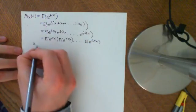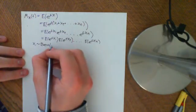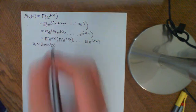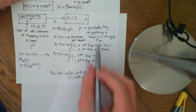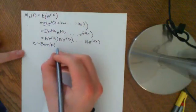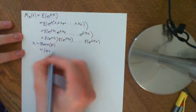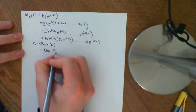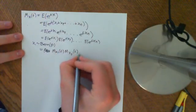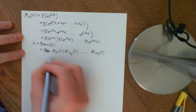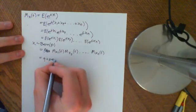Now, all of X1 through Xn are distributed Bernoulli because they each take on two possible values, and the chance they take the value 1 is p — the probability of getting a head on that individual flip. So they are all Bernoulli distributed with parameter p. We can therefore write each expected value as the moment generating function of Xi as a function of t, and we know the moment generating function of a Bernoulli distribution — it equals q + p·e^t.